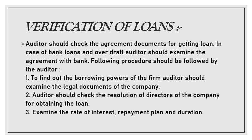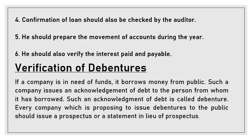The following procedure should be followed by the auditor: first, find out the borrowing power by examining the legal documents of the company to determine how much loan the company has the power to obtain. Auditors should check the resolution passed by the directors for obtaining the loan, including the rate of interest, repayment plan, and duration.